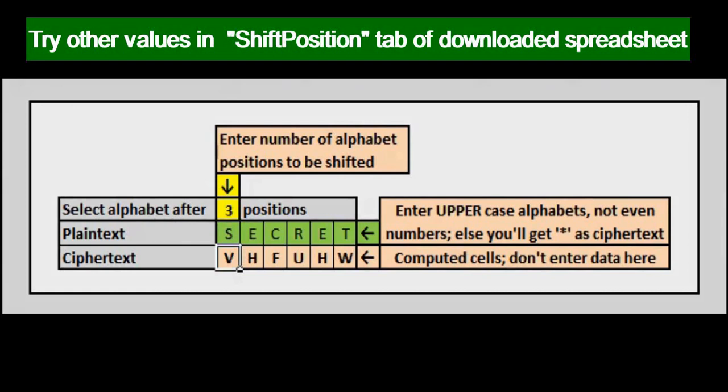In ciphertext, alphabet V is 3 positions to the right of S. Same is the case between E and H. Now you know how VHFUHW becomes secret.